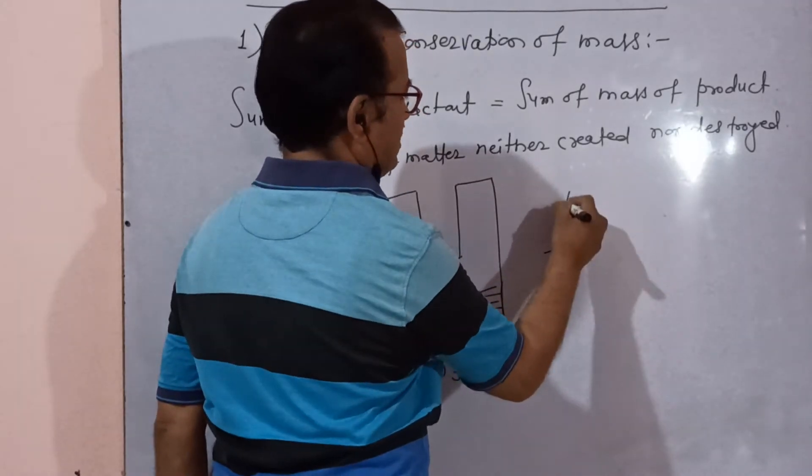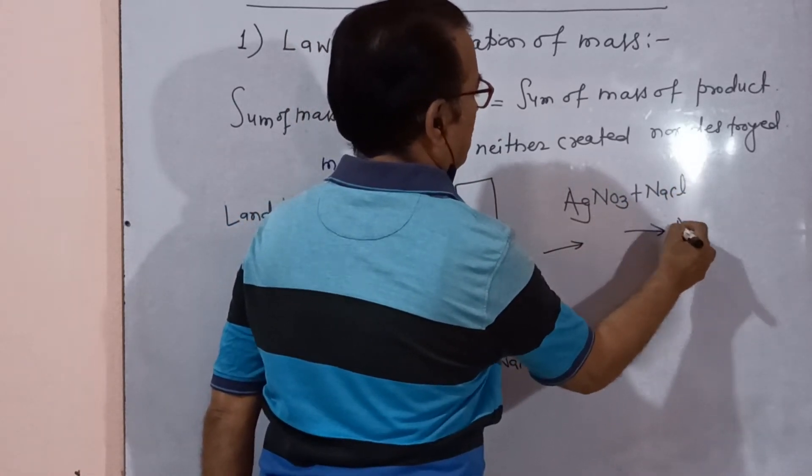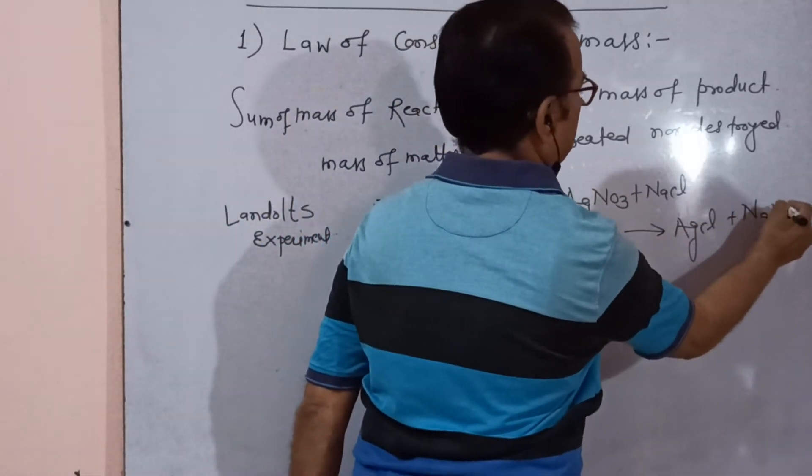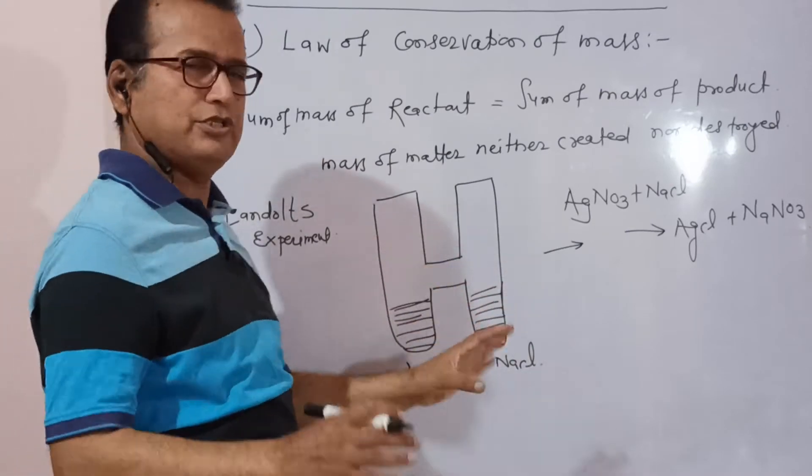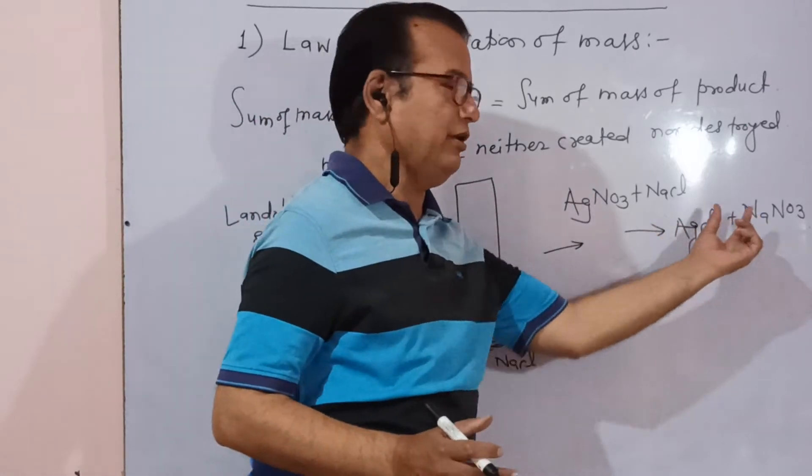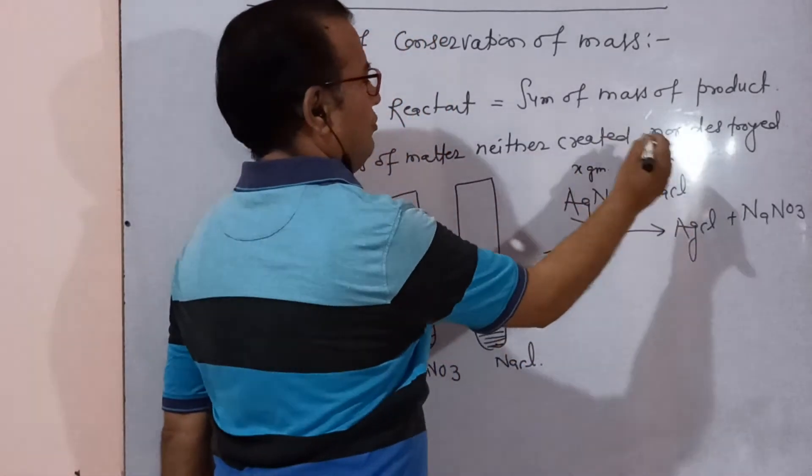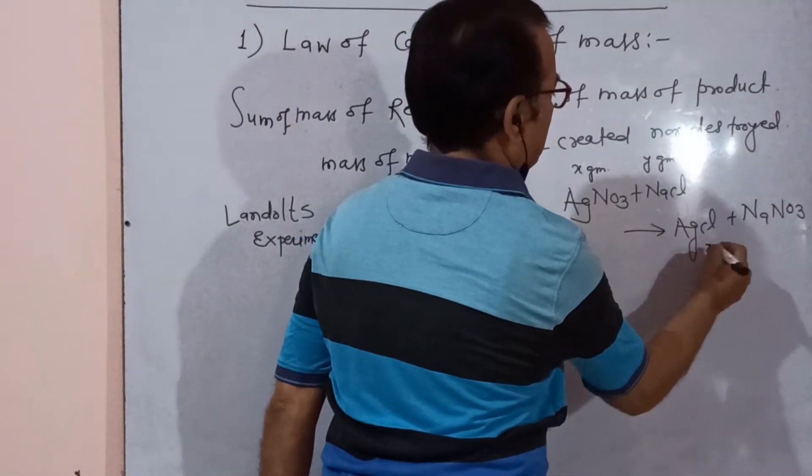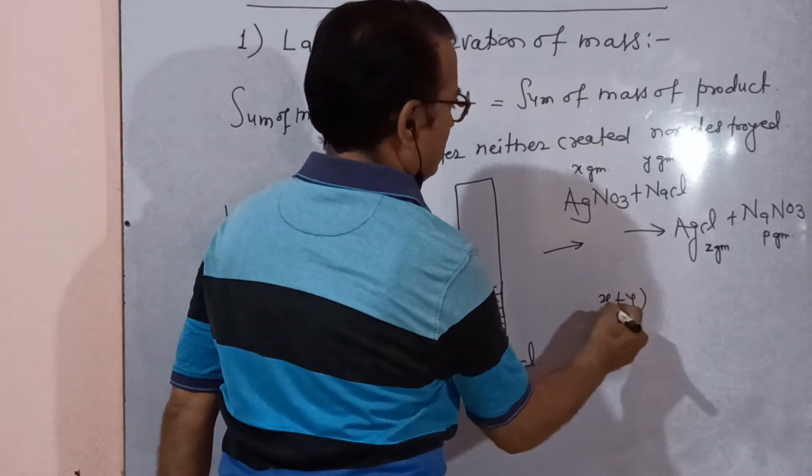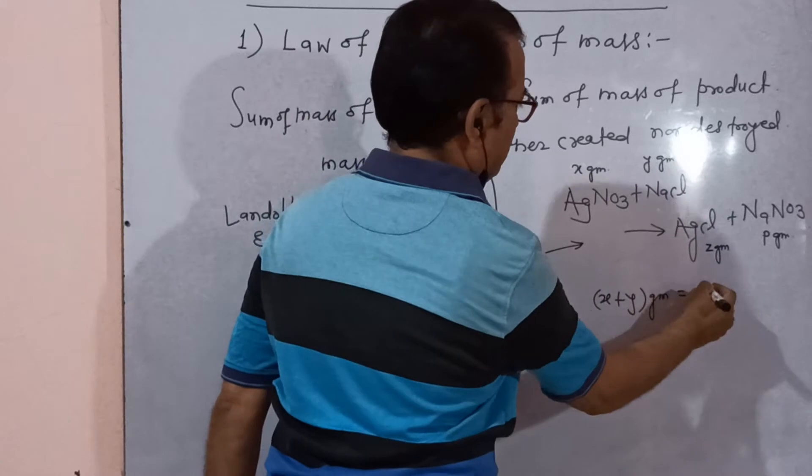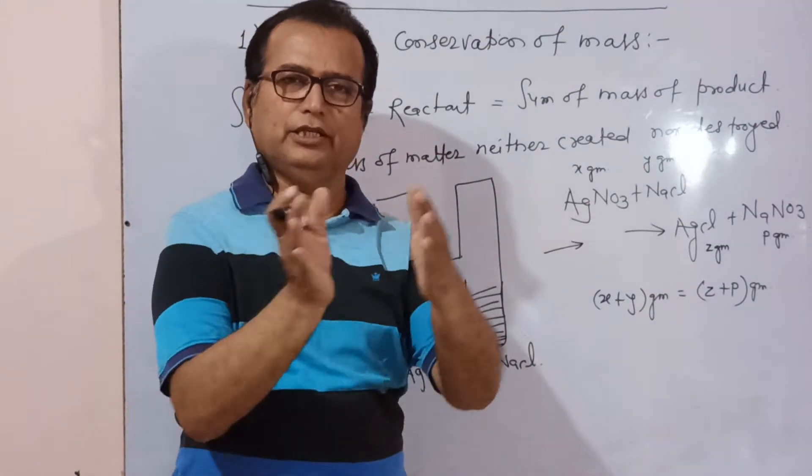It gives a product like this reaction: AgNO3 plus NaCl which is converted into AgCl precipitate plus NaNO3. By disturbing such type of H-shaped tube, when this product is formed, x gram of this AgNO3, y gram of this NaCl, which gives z gram of AgCl and p gram of NaNO3. Then x plus y gram of reactant equal to z plus p gram of product.